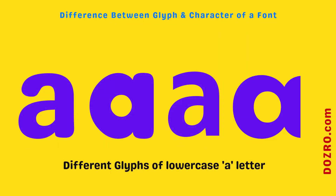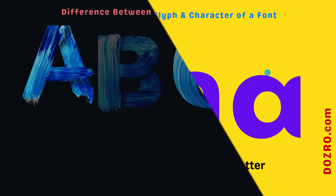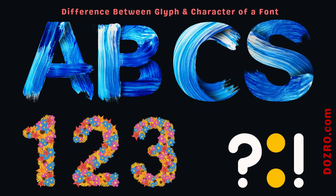More often, character and glyph are used interchangeably in the typographic world, but there is a subtle difference between the two. Glyph is the visual manifestation of a character. For example, each of the alphabets, numbers, and punctuation marks represent a character.